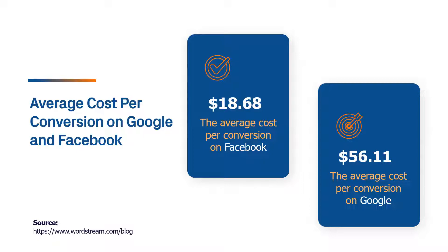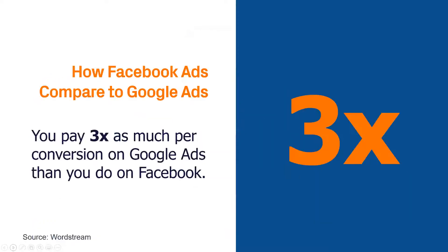The average cost per click across all business types was $1.72, and $18 per conversion — where conversion could mean lead generation, booking an appointment, or booking a coaching session. Compare that to an average of $56.11 on Google Ads. So Facebook is almost three times cheaper than other advertising platforms.